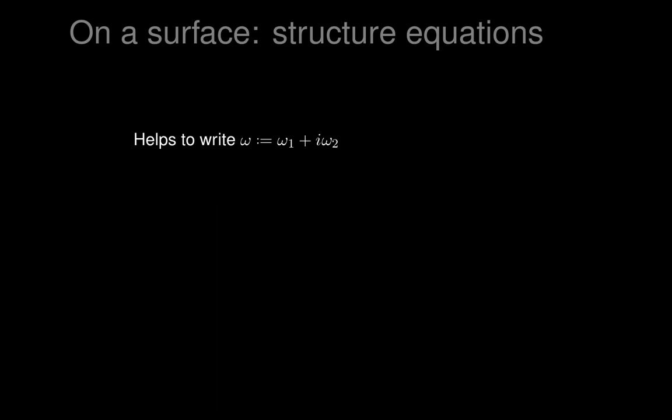Now it helps to write these things in complex notation to make them easier to work with. We'll let omega be omega_1 plus i times omega_2, a complex-valued one-form. You may not like this - we've already used the letter omega for the column vector (omega_1, omega_2, omega_3) - but since omega_3 is zero on the frame bundle of our surface when working on a particular surface, the column vector is essentially just a complex number. So it's not damaging to think of it as omega_1 plus i omega_2.